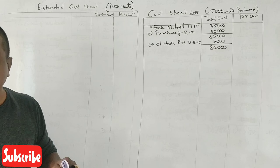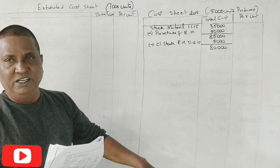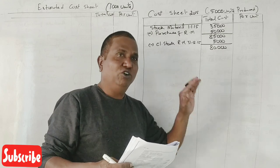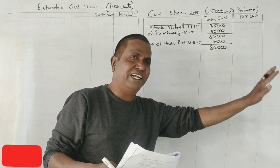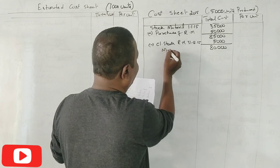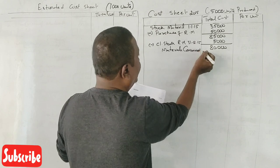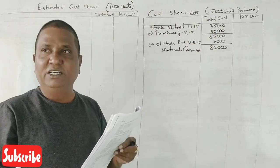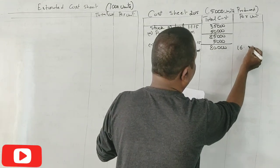First, we had ₹35,000 material — last year's material brought forward. Again, we purchased another ₹50,000 material. Totally we had ₹85,000 material. Out of ₹85,000, we consumed ₹80,000; remaining ₹5,000 materials are in the stores. This is called materials consumed. ₹80,000 for 5,000 units — what is per unit? 80,000 divided by 5,000 equals ₹16. So ₹16 rupees per unit.